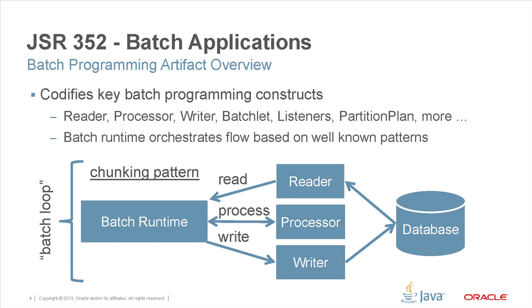The chunking pattern is designed to read, process, and write a large data set of items — these could be credit postings, inventory records, orders, or other things processed in bulk. The chunking pattern uses a batch loop to iteratively read, process, and write all items from the input data set, producing output in accordance with the business process at hand, and does so in a controlled manner that periodically checkpoints, enabling a long run to be interrupted for planned or unplanned reasons and then subsequently restarted to save time rather than starting from the beginning. This is a key principle in batch processing.